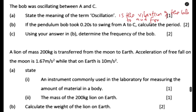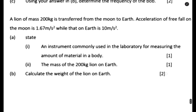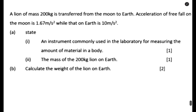There is an additional question on mass and weight, a topic at Grade 9 level. A lion of mass 200 kg is transferred from the moon to the earth. The acceleration due to gravity on the moon is 1.67 m/s² and on earth is 10 m/s². Part one asks: state the instrument used in the laboratory to measure the amount of matter in a body. Mass is the quantity of matter in a substance, and the instrument used to measure mass is the beam balance.